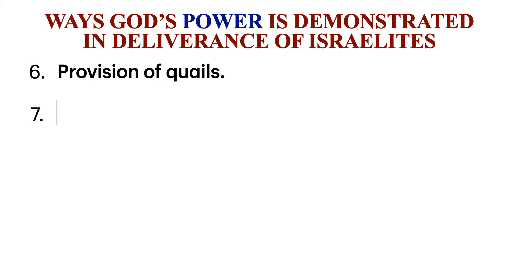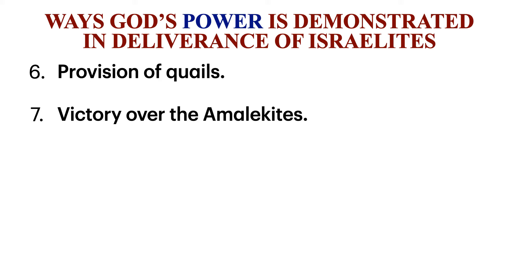Number seven, God gave the Israelites victory over the Amalekites. While at Rephidim, the Israelites were attacked by men from the tribe of Amalek. Moses had become too old to fight, so he asked Joshua, the son of Nun, to lead the people to battle. Moses stood on a hill with his hands held out to God in prayer. Whenever Moses' hands were held up, the Israelites were winning, but whenever Moses got tired and put his hands down, the Amalekites began to win. Aaron and Hur held up Moses' hands and eventually the Israelites won, showing that God had power and had given victory to the Israelites.